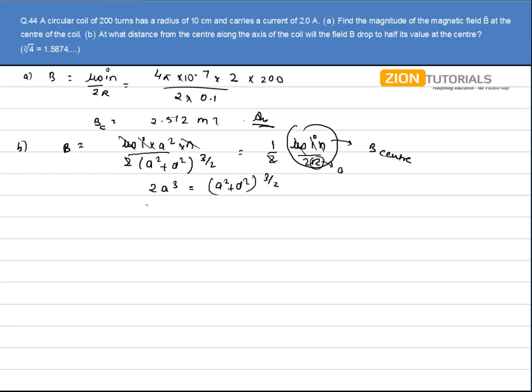Taking cube root, I have cube root of 2 into A is equal to A square plus D square to the power 1 by 2. Now,